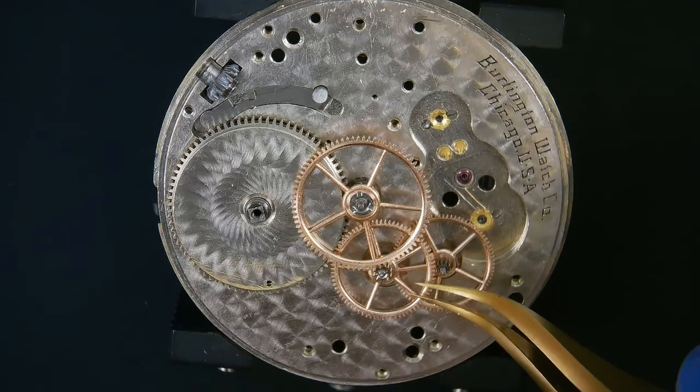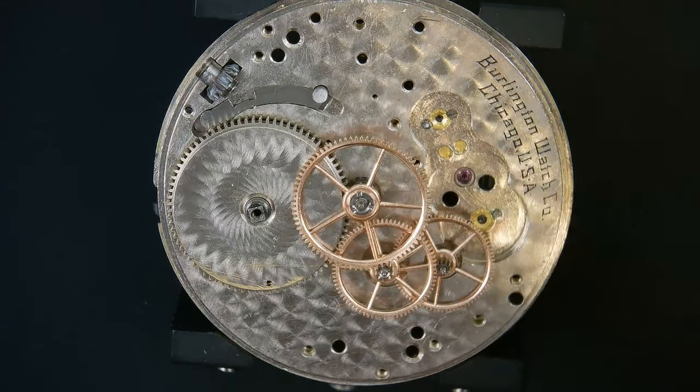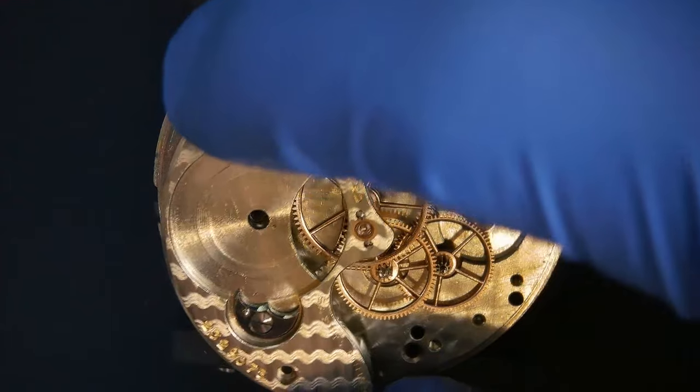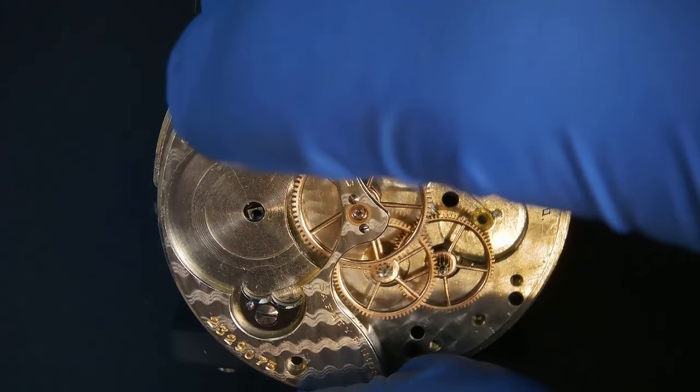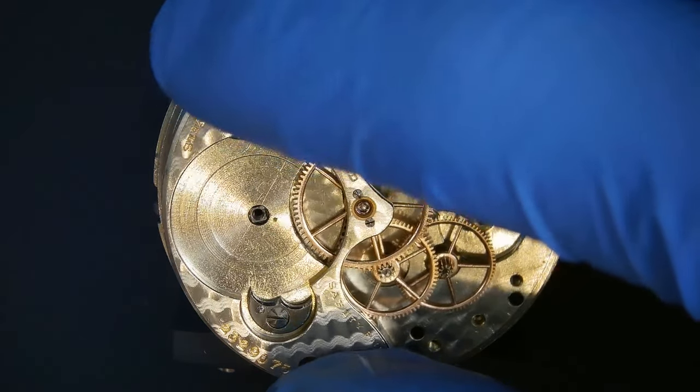And of course the center wheel. Which is also known as the second wheel. Let me know if you know why that is. Let's get the barrel bridge down. So we line up the pivots with the holes as best as we can. And then I complete the alignment off camera.